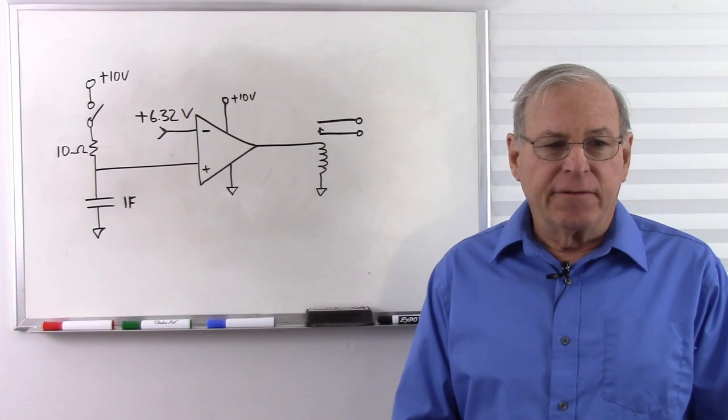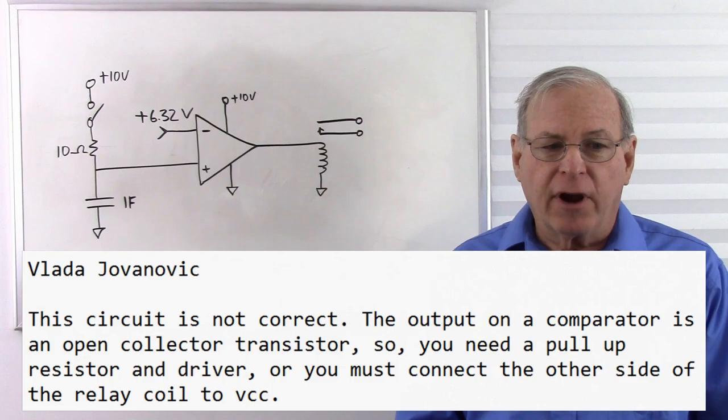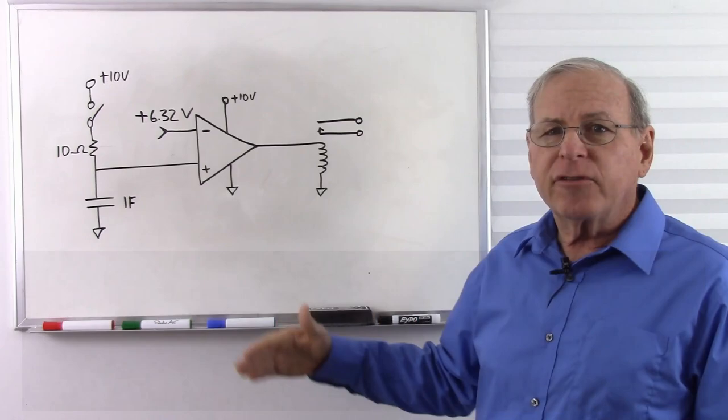The comment is by Vlada Jovanovic, and he said, 'This circuit is not correct. The output on the comparator is an open collector transistor. So, you need a pull-up resistor and driver, or you must connect the other side of the relay coil to VCC.'